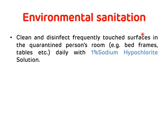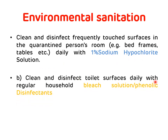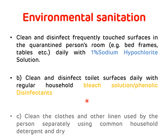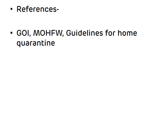For environmental sanitation during the home quarantine period: clean and disinfect frequently touched surfaces in the quarantined person's room daily with 1% sodium hypochlorite solution. Clean and disinfect toilet surfaces daily with regular household bleach solution or phenolic disinfectants. Clean clothes and other linen used by the person separately using common household detergent and dry them.